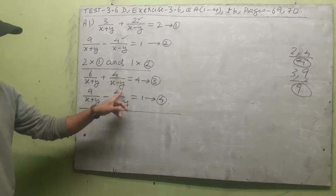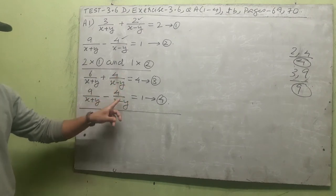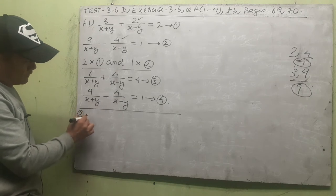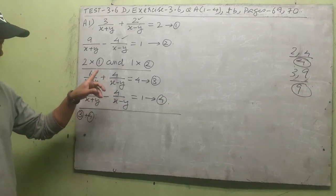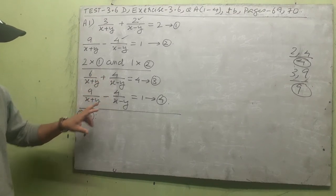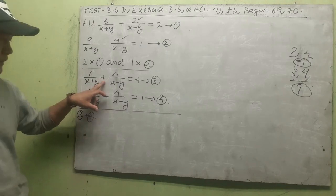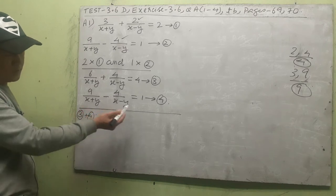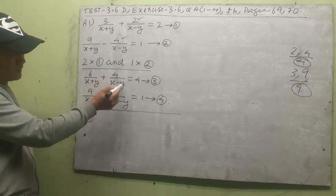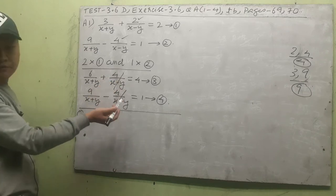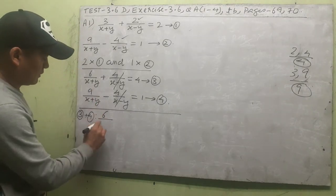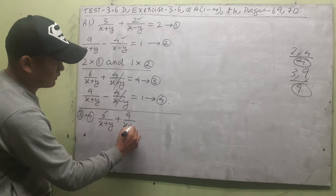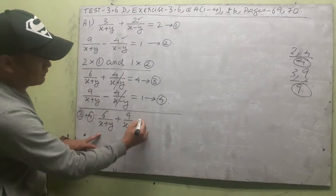Now in equations 3 and 4, the coefficients of 1/(x−y) are +4 and −4 — equal in absolute value but opposite in sign. When signs are opposite we add the equations: 3 plus 4. The +4/(x−y) and −4/(x−y) cancel to zero, and 6/(x+y) plus 9/(x+y) remains.